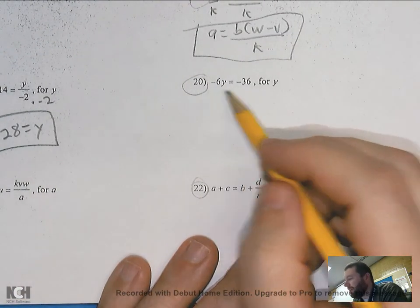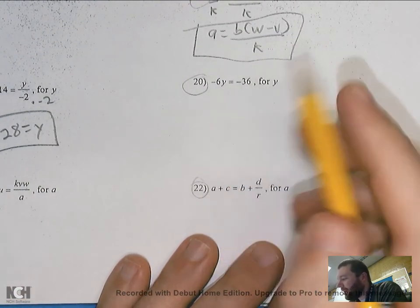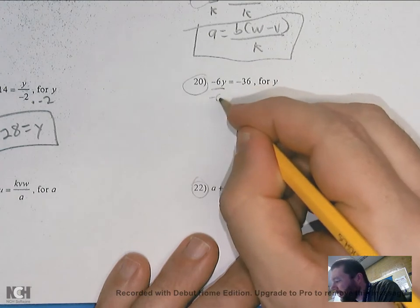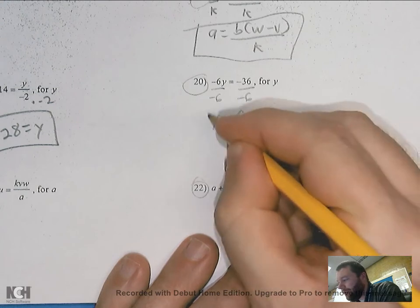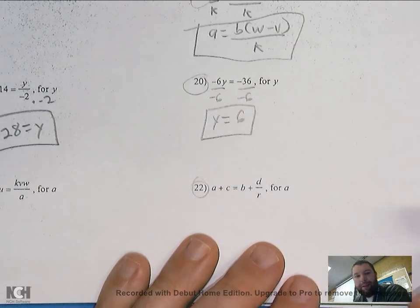Number 20, negative 6y equals negative 36. Trying to solve for y. So divide by negative 6. Again, you can actually divide negative 36 by 6. So y should equal a positive 6.